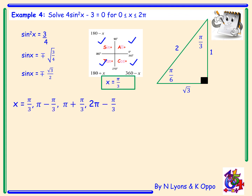π/3 is the angle in the first quadrant. The second quadrant angle is π − π/3 = 3π/3 − π/3 = 2π/3. The third quadrant angle is π + π/3 = 3π/3 + π/3 = 4π/3. The fourth quadrant angle is 2π − π/3 = 6π/3 − π/3 = 5π/3.